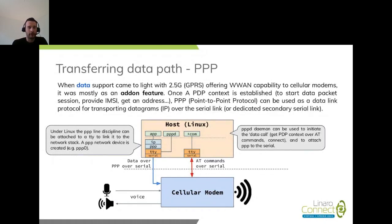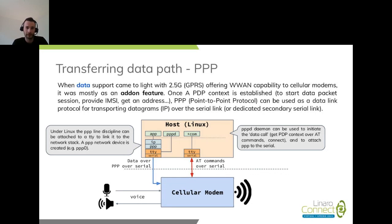Then came data support with 2.5G GPRS, which brought WAN capability and allowed performing what we call a data call, enabling the modem to submit IP packets. Initially, as data was mostly an add-on feature, the easiest way to do that was to allow the serial link to transport directly the network packets. Modems were allowing to switch the serial link into a specific data mode in order to transport binary data instead of regular AT commands — either via the main serial link if there is only one, or via a secondary link to allow parallel AT commands. The usual protocol for this is PPP, point-to-point protocol, which simply allows submitting network packets over a serial link.